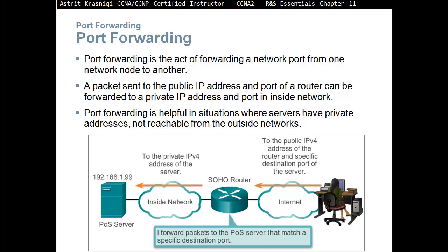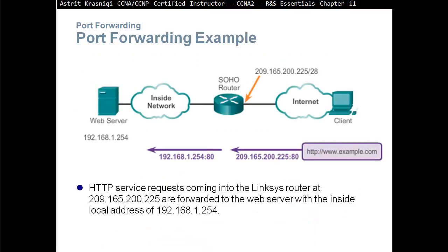Port forwarding is the act of forwarding a network port from one network node to another. A packet sent to the public IP address and port of a router can be forwarded to a private IP address and port on the inside network. Port forwarding is helpful when servers have a private address not reachable from outside. The router sees the destination port and forwards the communication to the correct internal server based on that port number.